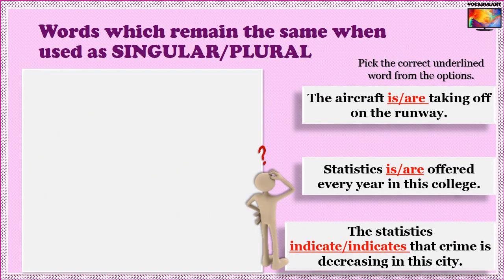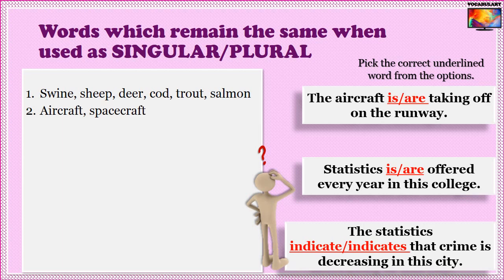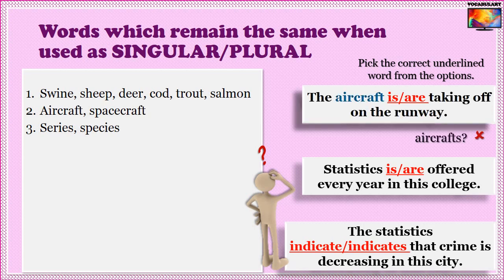Some nouns can be singular or plural — their spelling remains the same. Nouns such as 'swine,' 'sheep,' 'deer,' 'cod,' 'salmon,' 'aircraft,' 'spacecraft,' 'series,' 'species' could be singular or plural with the same spelling. Words like 'aircraft' can refer to a single plane or more than one — using 'aircrafts' for a plural sense is totally wrong. So 'The aircraft is taking off on the runway' and 'The aircraft are taking off on the runway' are both possible depending on whether you are talking about one plane or more.